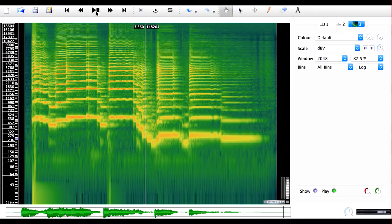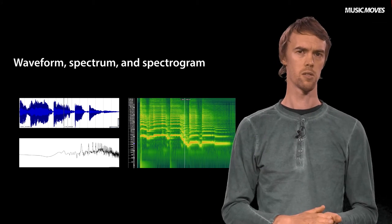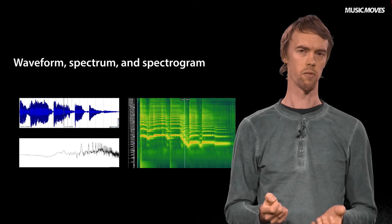Now we have three representations of the sound signal. Already from these representations, we can start to say something about the sound. The amplitude of the sound wave and the frequency content are both varying over time. Still, the representations we have looked at contain large amounts of information, and sometimes it might be necessary to narrow down our description even further.